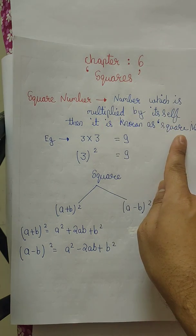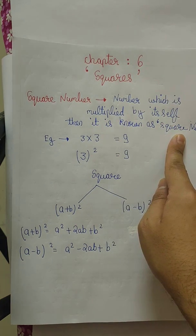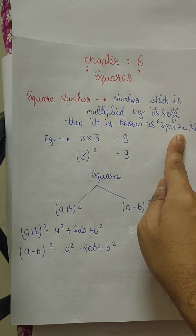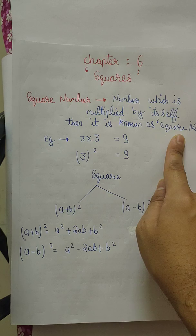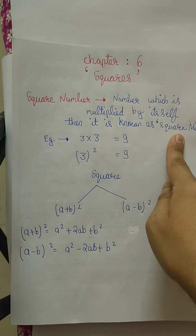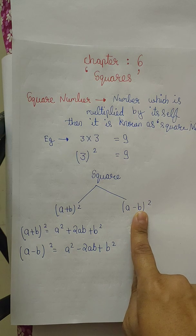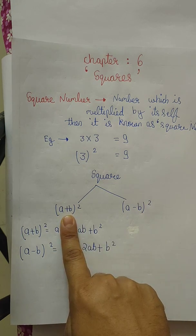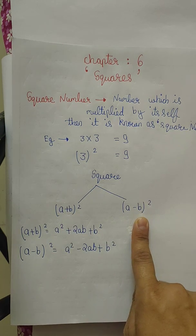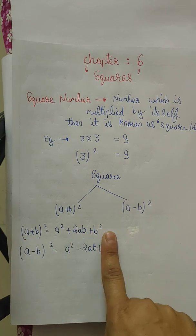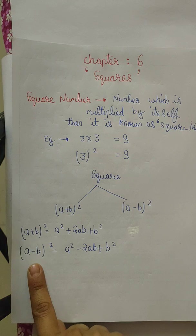So let's start. A number which is multiplied by itself is basically square, but we can't multiply every large number. 25 ka square, 25 into 25 would take a lot of time. So we have given two formulas to find the square of any bigger number: (a+b)² and (a-b)². For (a+b)² that is a² + 2ab + b², and (a-b)² gives a² - 2ab + b².